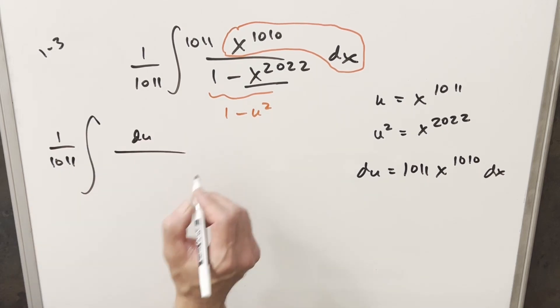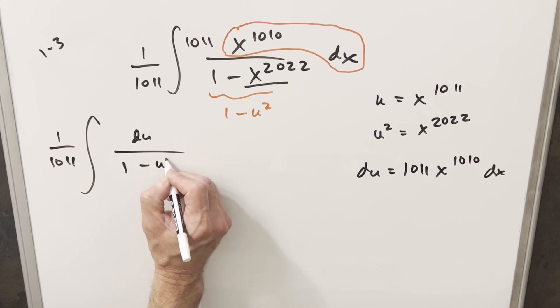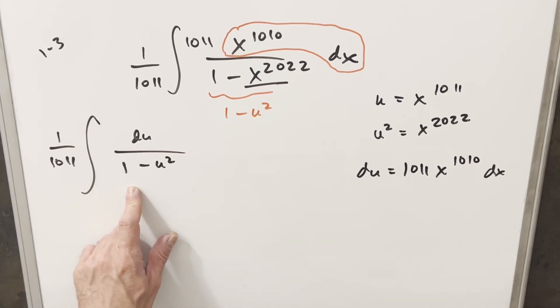So we'll have our du value in the numerator, and then, like I said, we're going to have just 1 minus u squared here. But this is actually a really common integral, and we're just going to use a formula for this. Let's just take a look at that real quick.